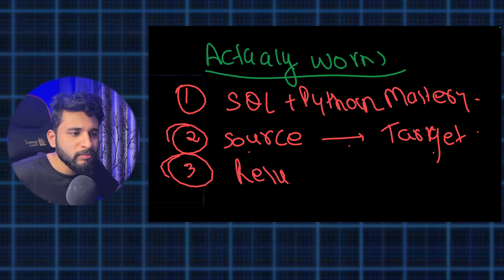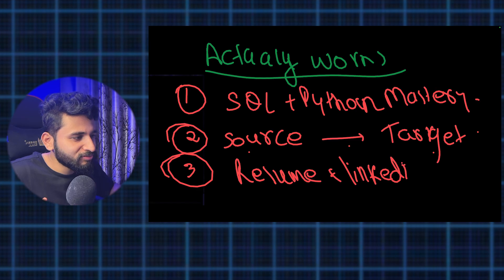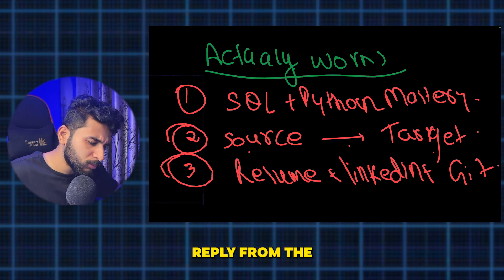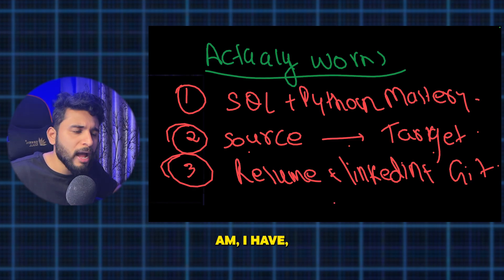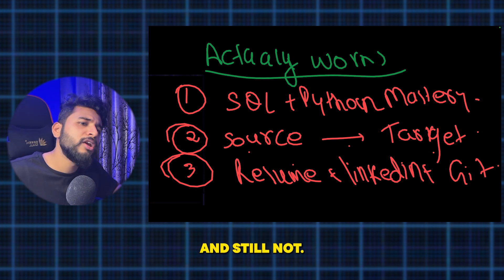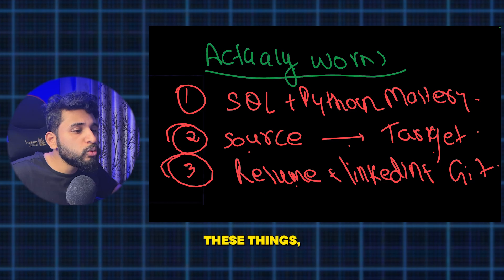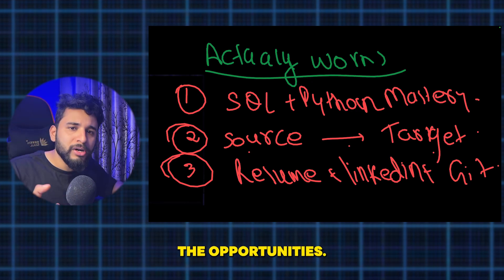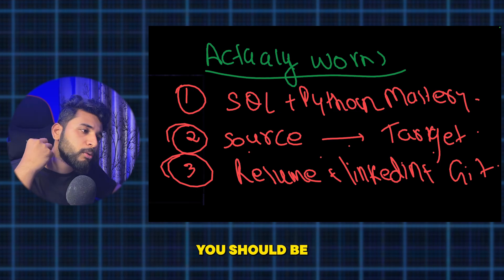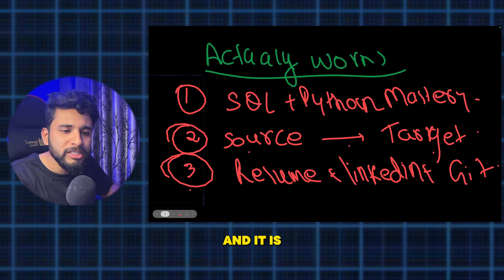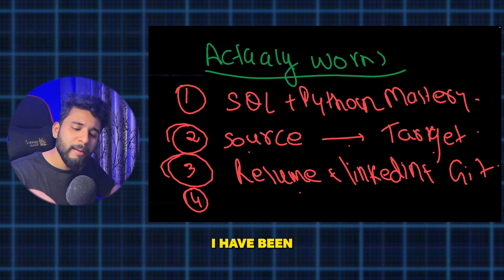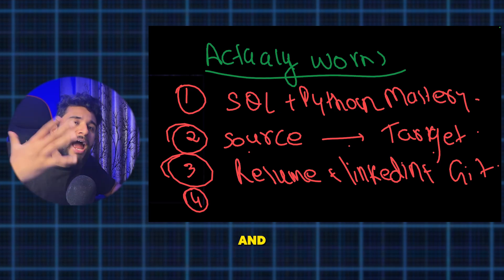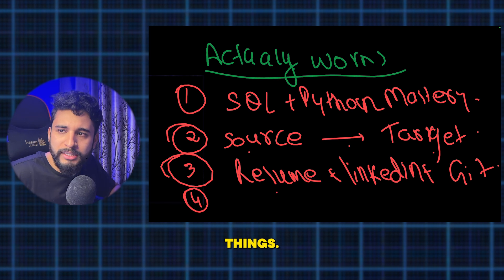Third: resume, LinkedIn, and GitHub. If you have these three things properly set up, you will never say 'I've learned everything but I'm not getting interview calls.' Make your visibility in the market. Start posting and sharing your learnings — it is very important. I've guided many people to do these things and it has helped them transition into data engineering and get their first job.